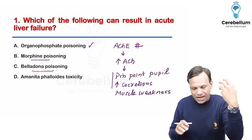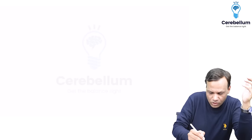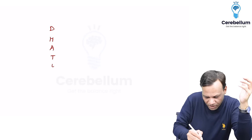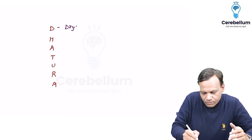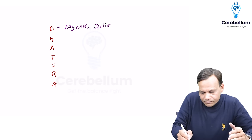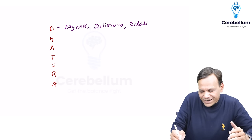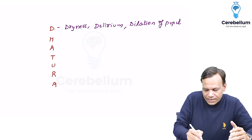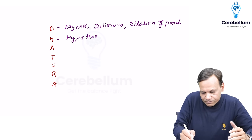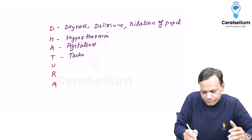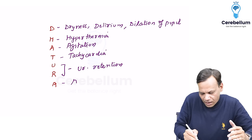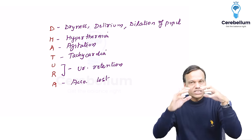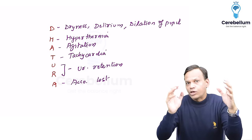Belladonna and datura are two sources of atropine, so belladonna, datura, and atropine poisoning are the same. Symptoms remembered from DHATURA: D for dryness of mouth, delirium, dilation of pupil (mydriasis); H for hyperthermia; A for agitation; T for tachycardia; U for urinary retention; R for loss of accommodation leading to blurred vision. There is no acute liver failure in belladonna poisoning.